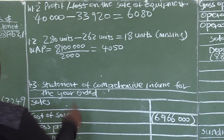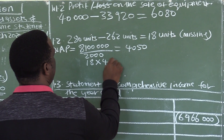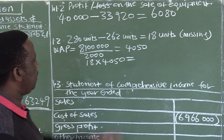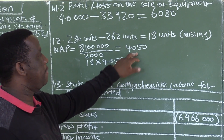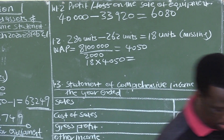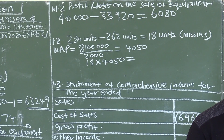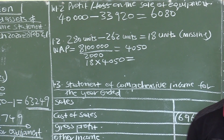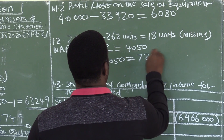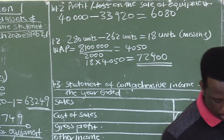The weighted average price is 4,050. So 18 units multiplied by 4,050 — because each unit is valued at 4,050 and there are 18 units missing — gives us 72,900. The trading stock deficit is 72,900.